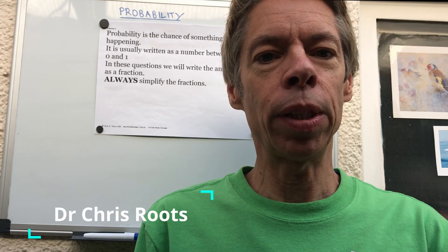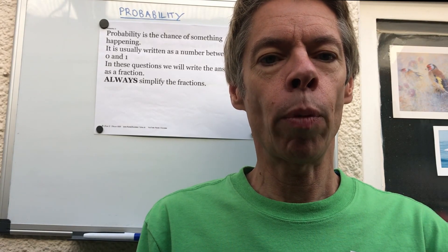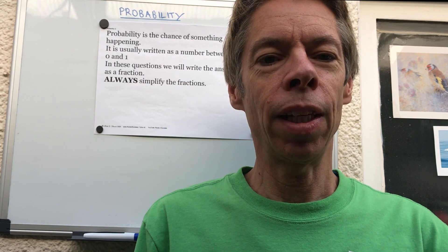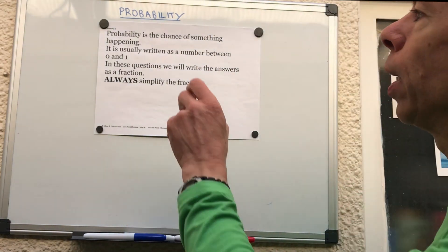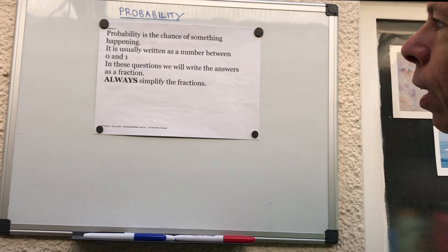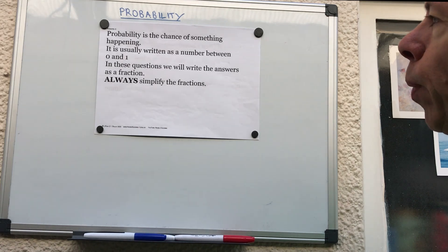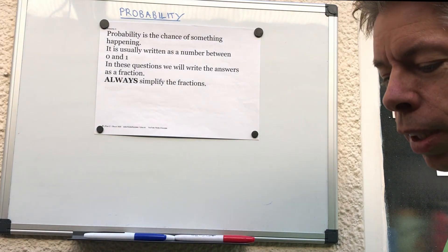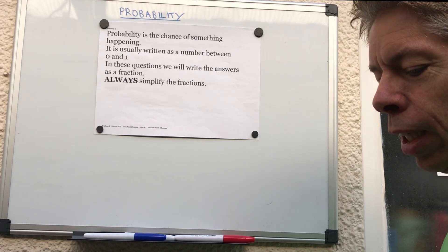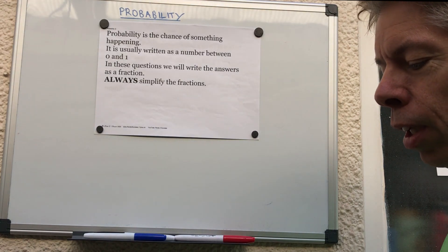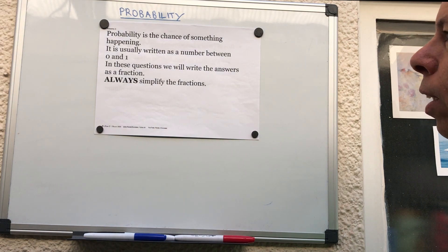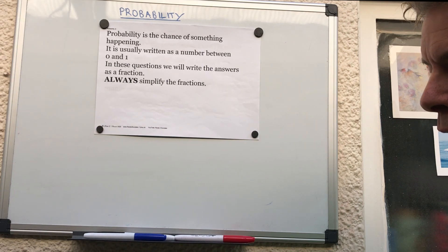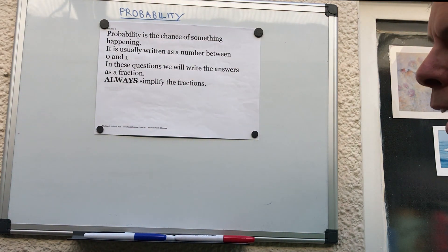Hello everyone, in this video we're going to be talking about probability. You may be able to see behind me that I've already put something on the board telling you what probability is. Probability is the chance of something happening. It's usually written as a number between zero and one. For example, the chance of me winning the lottery today is zero because I haven't bought a ticket. The chance of the sun setting today I would say is one — that's definitely going to happen.